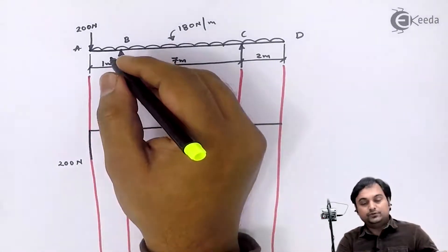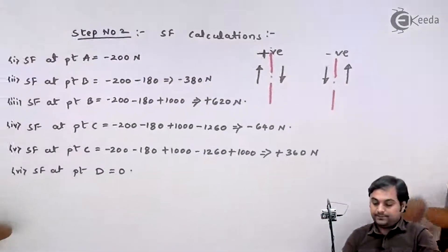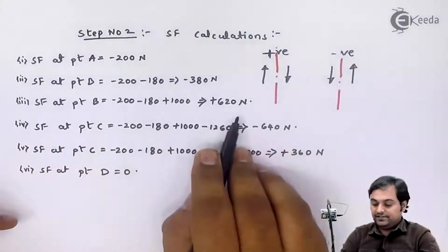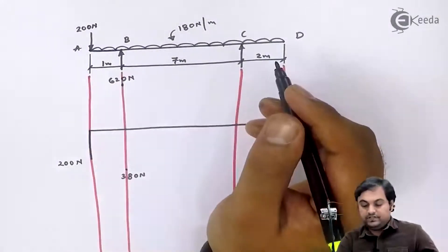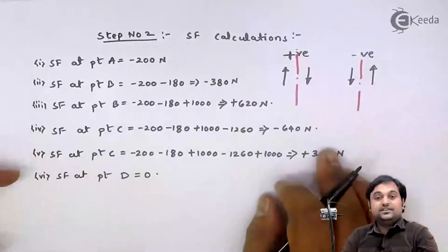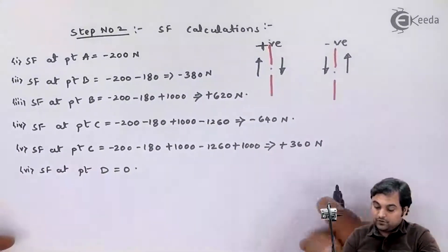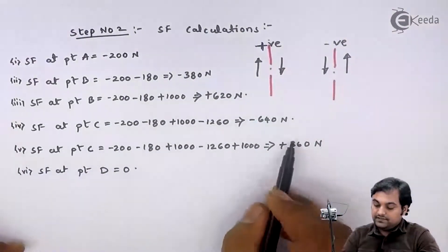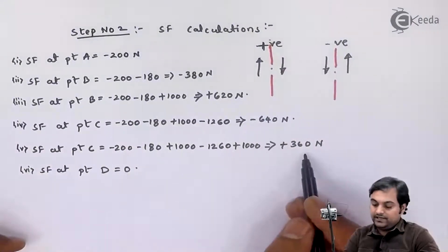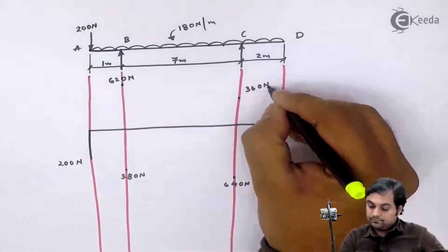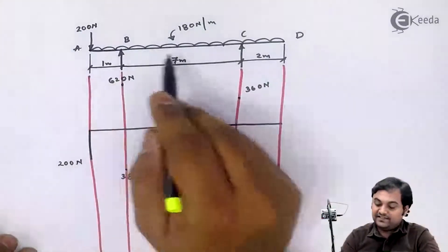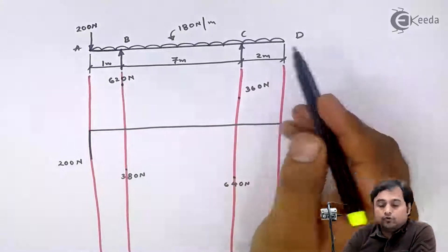We have two values: one is minus 380, other is plus 620. Next, SF at C, we have two values, one is minus 640 and other is plus 360. Now as we can see, there is UDL throughout.